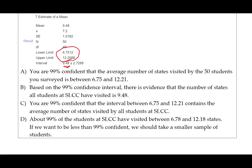Let's move on to answer B. Based on the 99% confidence interval, there is evidence that the number of states all students at SLCC have visited is 9.48. So 9.48 again is just the sample statistic, the point estimate. You can't actually visit 9.48 states — if you visit 0.48 of a state, it counts for the whole state. When we are talking about a confidence interval, we have to be talking about the mean for the whole population.